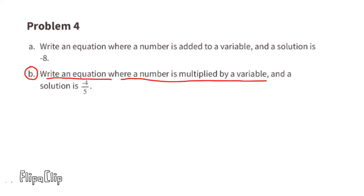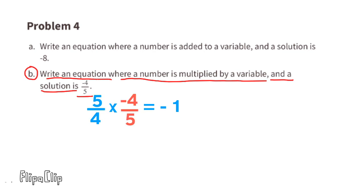Part b: write an equation where a number is multiplied by a variable and the solution is negative 4/5. We can use 5/4 x equals negative 1, because when we multiply 5/4 times its negative reciprocal the answer is negative 1. So the equation is 5/4 x equals negative 1.